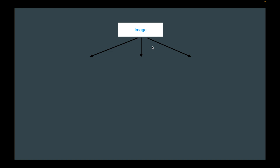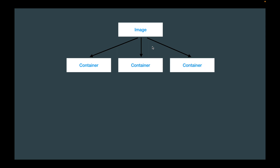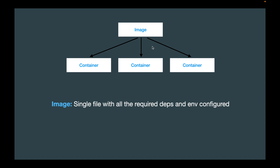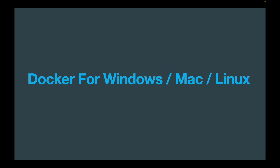From a single image we can create multiple instances, which we call containers. A container is an instance of an image. When we run Docker, we pull an image from Docker Hub or from our local machine, create a container — a closed environment in which the program runs — and execute it. That gives us our up-and-running software.